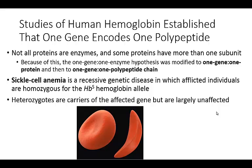One example of this is sickle cell anemia, which is a recessive genetic disease. Afflicted individuals are homozygous for the sickle cell trait. Heterozygotes are carriers but are largely unaffected, and they will have normal red blood cells. Those who have sickle cell anemia will have red blood cells with a sickle shape, and their hemoglobin will not be functioning correctly.